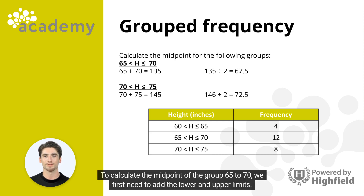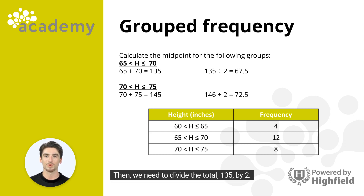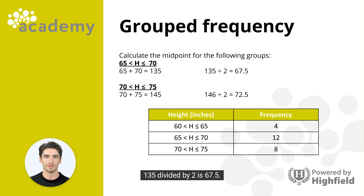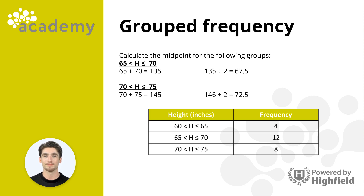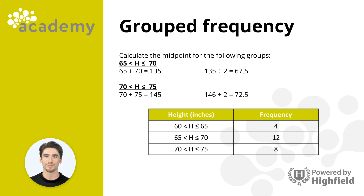To calculate the midpoint of the group 65 to 70, we first add the lower and upper limits: 65 plus 70 equals 135. Then we divide 135 by 2. 135 divided by 2 is 67.5. Therefore, the midpoint of the group 65 to 70 is 67.5.